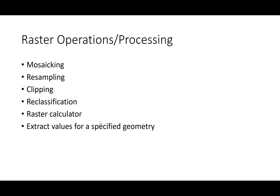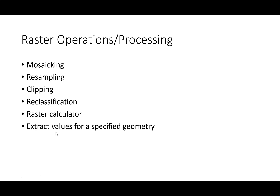These are some of the operations we perform on raster datasets in hydrology: mosaicing, resampling, clipping, reclassification, raster calculations, and extracting values for a specified geometry. Let's briefly discuss what each of these means.